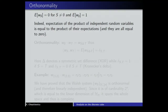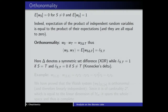Regarding orthonormality, also discussed by Adam: the expectation of a Walsh function W_S equals 0 whenever S is different from the empty set, and equals 1 when S is the empty set. This is trivial because the Walsh function is a product of independent random variables; the expectation of a product of independent random variables is the product of expectations, and each Rademacher variable has expectation 0. The only way to get a non-zero expectation is when the product itself is empty.